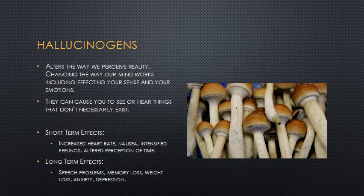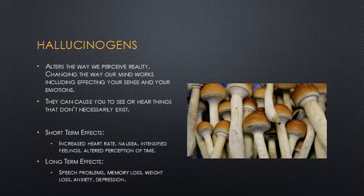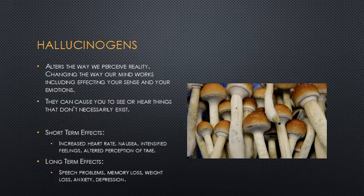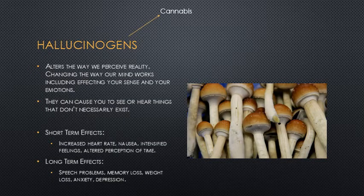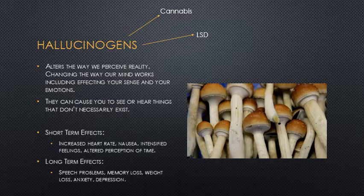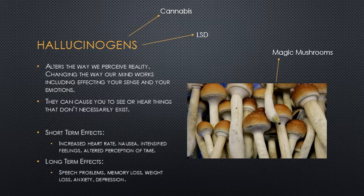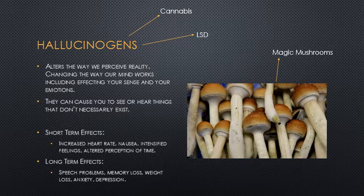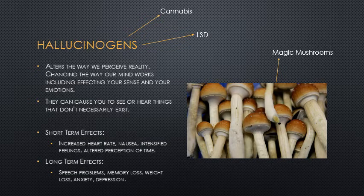The last category is hallucinogens. These drugs alter the way that you see things or the way you perceive the reality around you — they mainly affect your senses and your emotions, and can cause you to see or hear things that aren't necessarily there. Examples include cannabis, which also has this quality in addition to being a depressant, as well as LSD and magic mushrooms. Short-term effects can include an increased heart rate, nausea, intensified feelings, and an altered perception of time. Long-term effects include speech problems, memory loss, weight loss, anxiety, and depression.